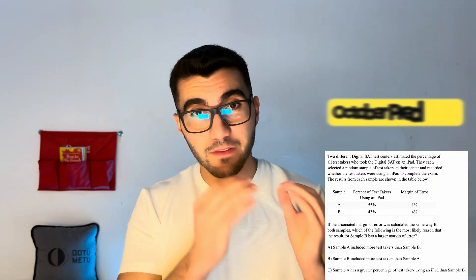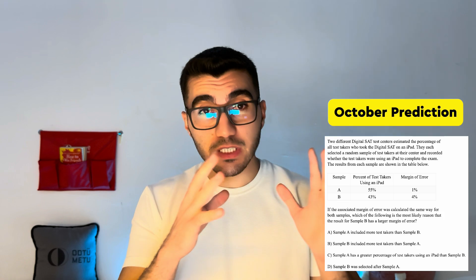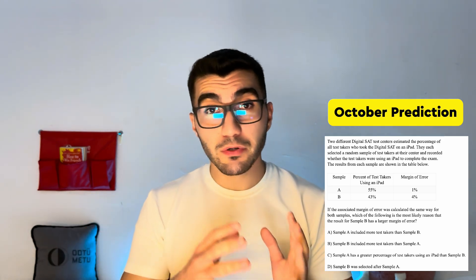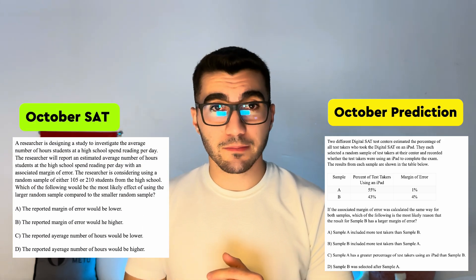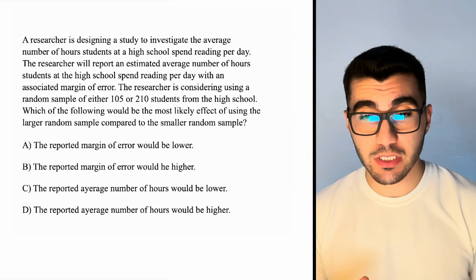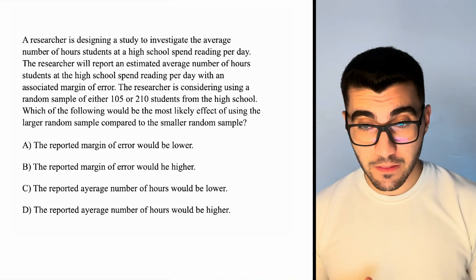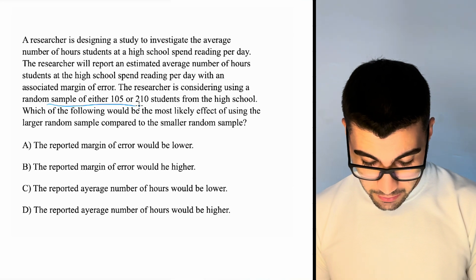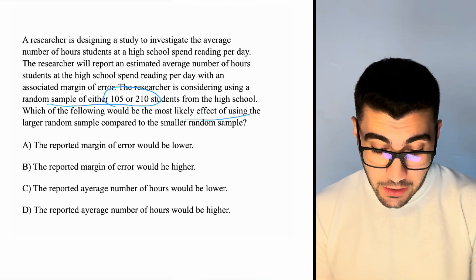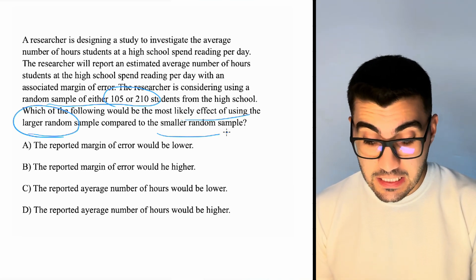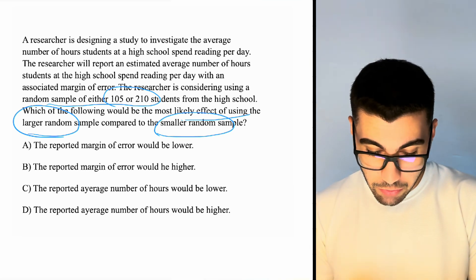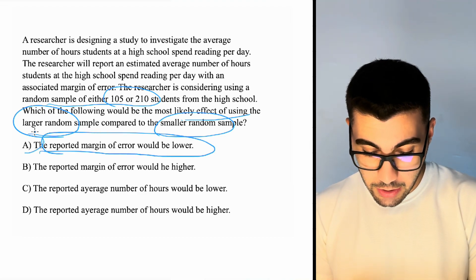The next predicted question covered the concept that a larger sample means a smaller margin of error, and a smaller sample means a larger margin of error. The October SAT question asked: a researcher is considering using a random sample of either 105 or 210 students. Which would be the most likely effect of using the larger random sample compared to the smaller one? With a larger random sample, the margin of error is smaller — the reported margin of error would be lower. Choice A.